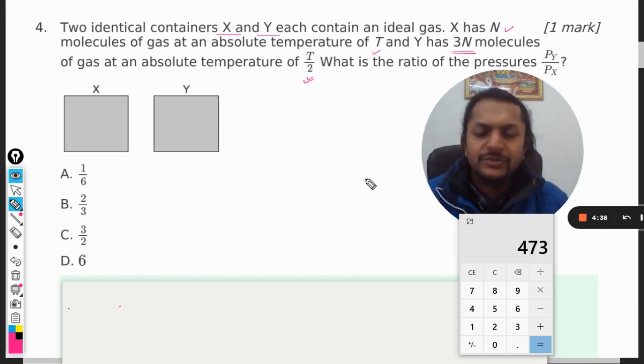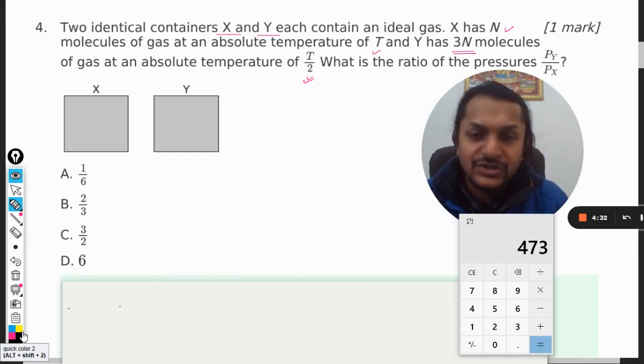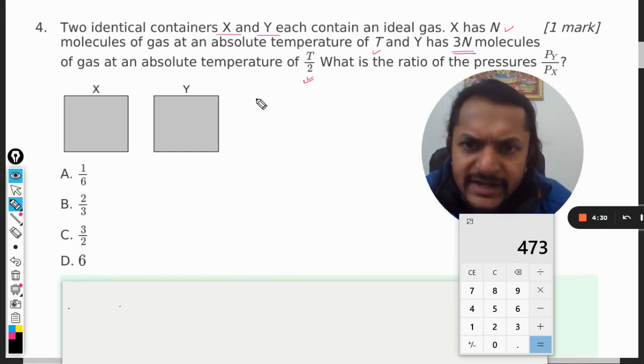So first of all, we are now going to use the ideal gas equation here. In case of X, like for X it will be Px, and the volume is same in both of the cases, I'm just writing it V.